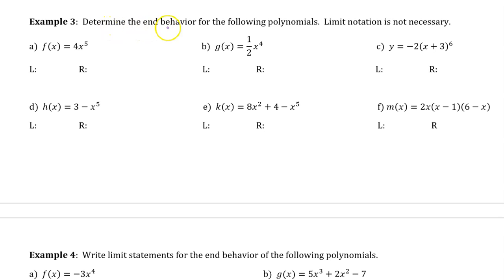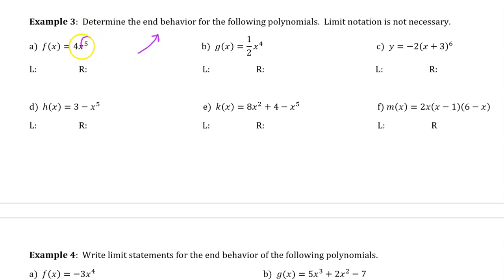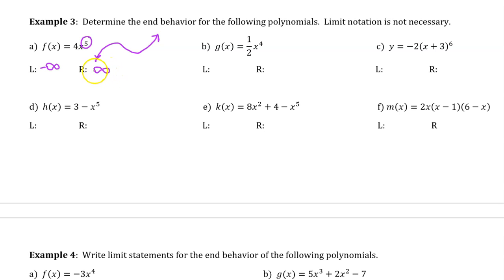Example 3: determine the end behavior for the following polynomials — limit notation is not necessary. For part a, we have a positive leading coefficient, which tells us the function is going to be rising on the right. We also have an odd degree, which tells us the left and right end behaviors will be in opposite directions. So on the left, the function approaches negative infinity, and on the right it approaches positive infinity.